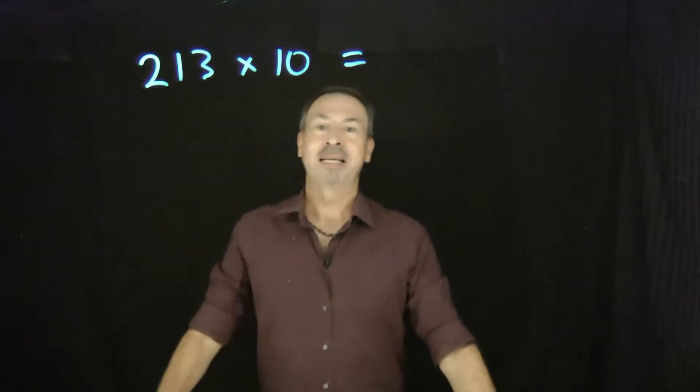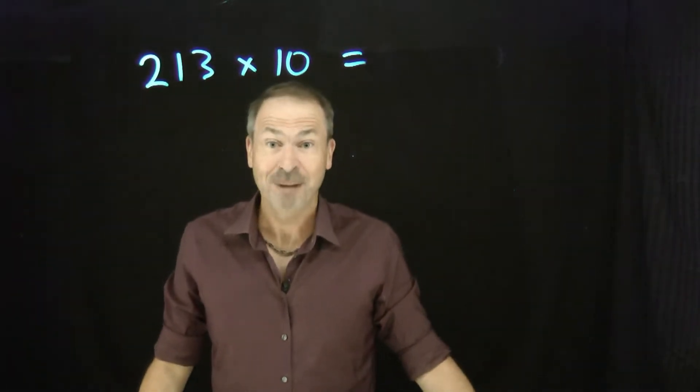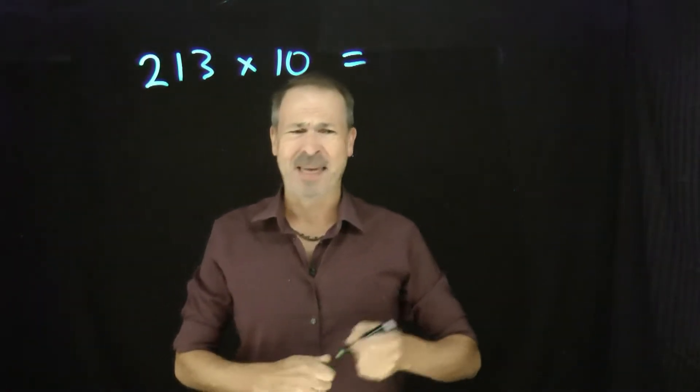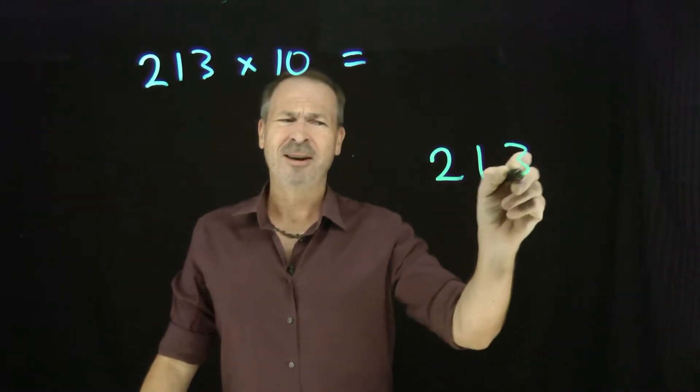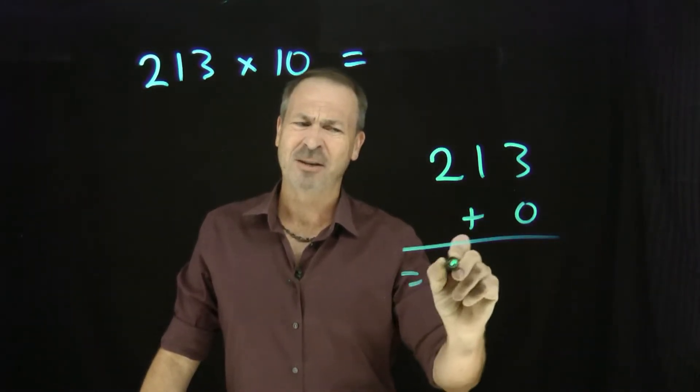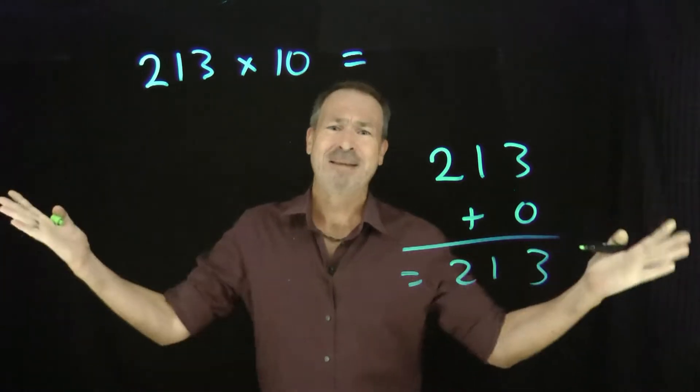For example, if I had to multiply 213 by 10, I was told just add a zero. And I thought about that, okay, 213, if I just add a zero, don't I just get 213 again? It really made no sense.